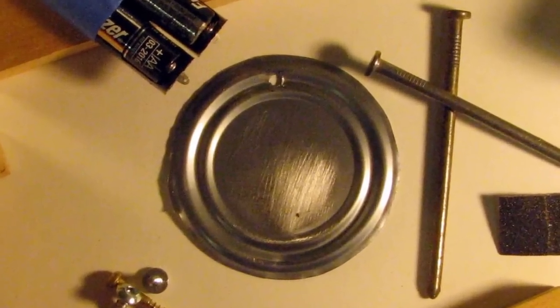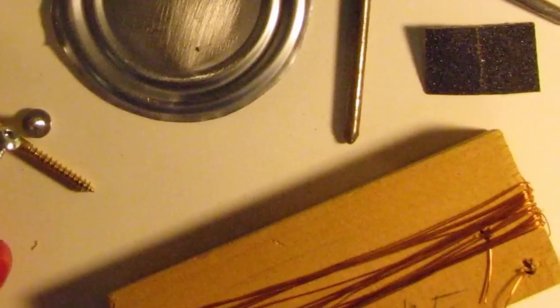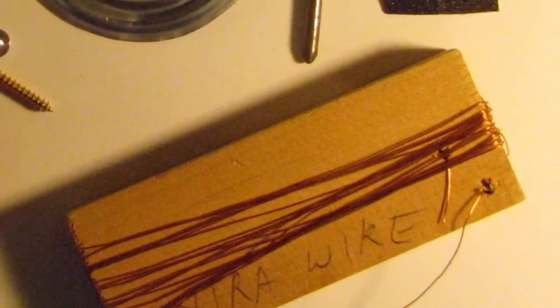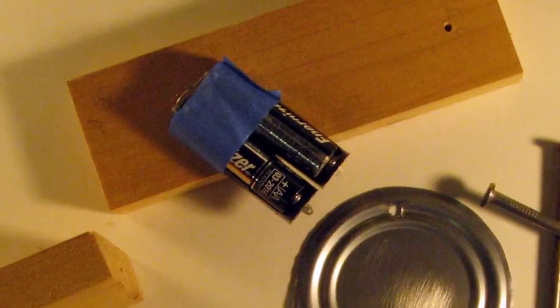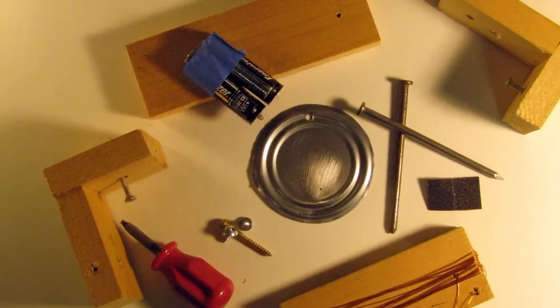A metal lid from a tin can. This lid contains iron. It is attracted to a magnet. We also need 10 meters of 28 gauge magnet wire, two AA batteries, two 4 inch common nails, some wood screws, and some pieces of wood.